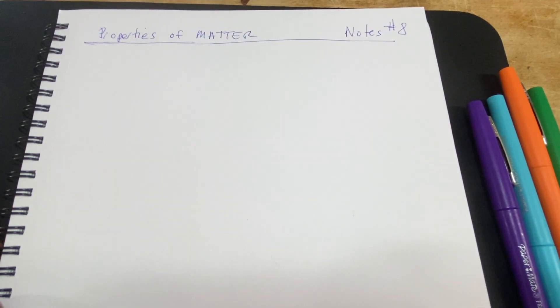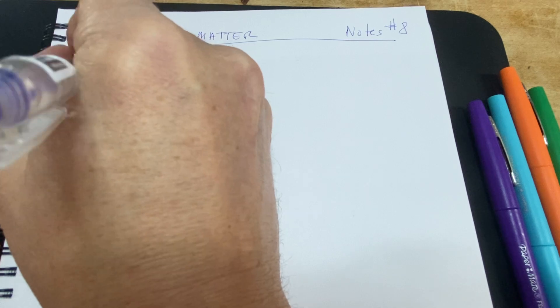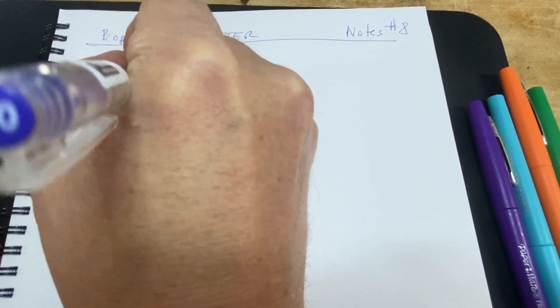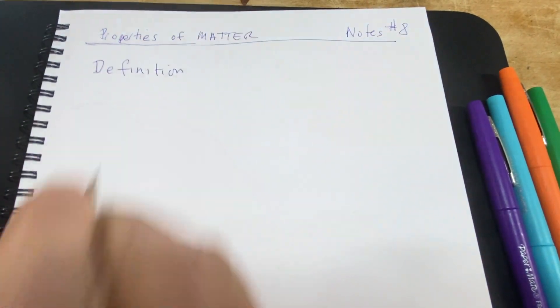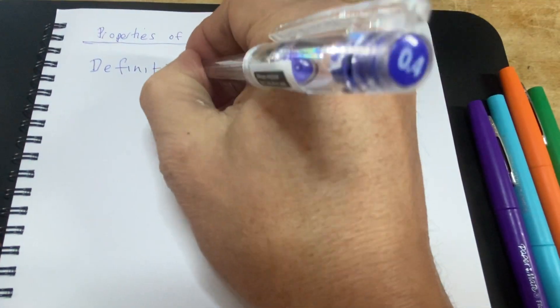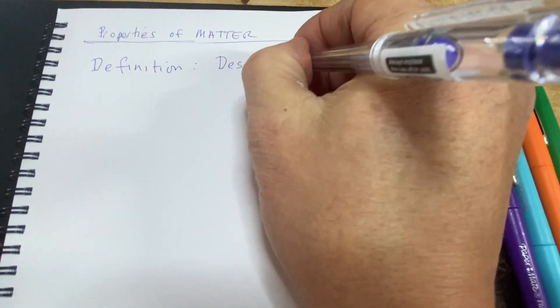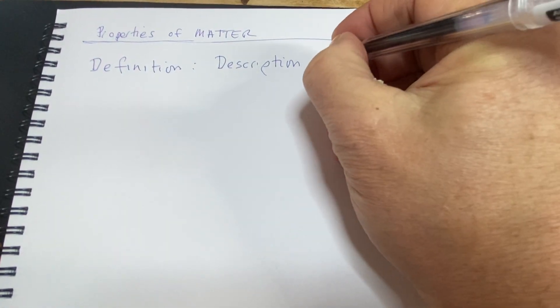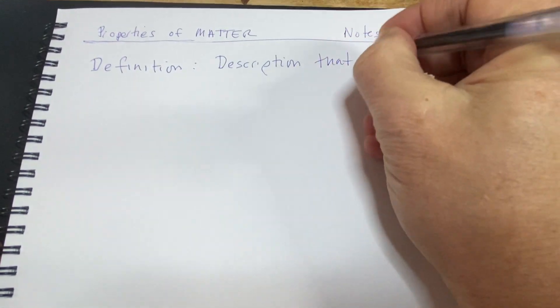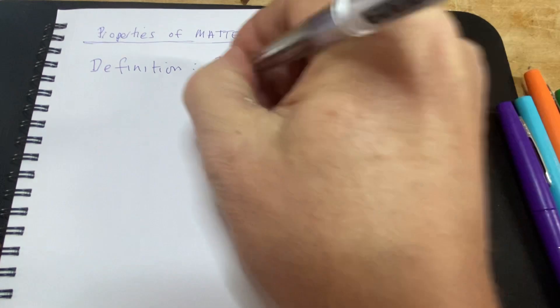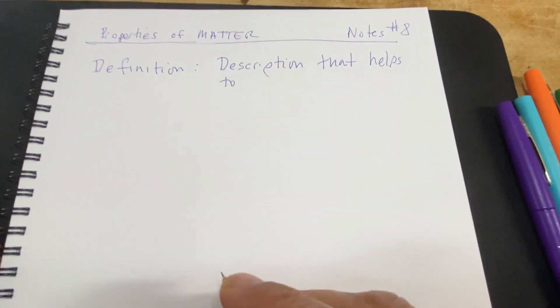Today we're introducing the main concept of what a property of matter is. We're going to start with a definition. Essentially, it's a description that helps to identify a substance.